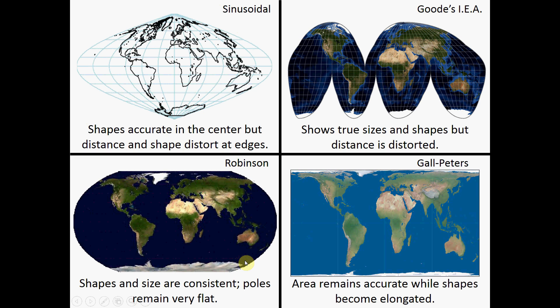The last one is Gall-Peters. The area is fairly accurate, but what starts happening is they stretch it, so the distance isn't accurate. You have a good area portrayed on the map, but the distance looks stretched from the tops and bottoms — everything is a little elongated and stretched out. It's like when you're trying to Photoshop your buddy and you make him a little too skinny. But those are the eight map projections you have to know for this class.